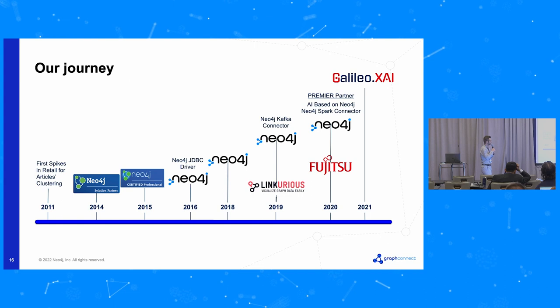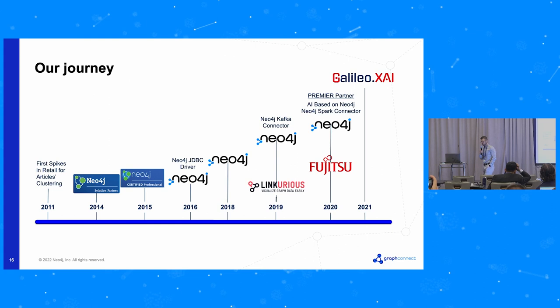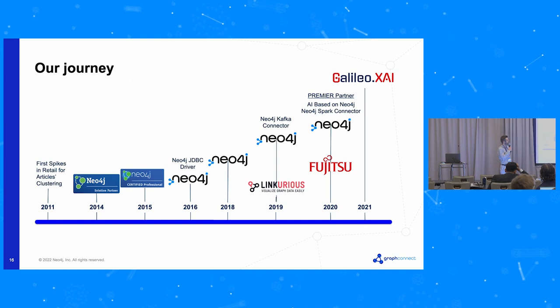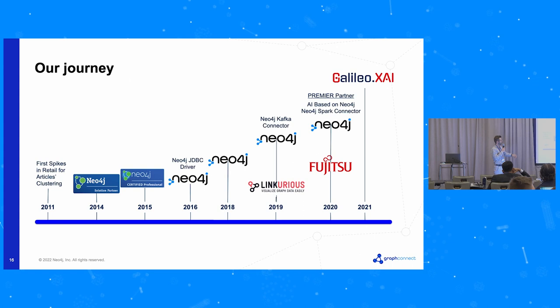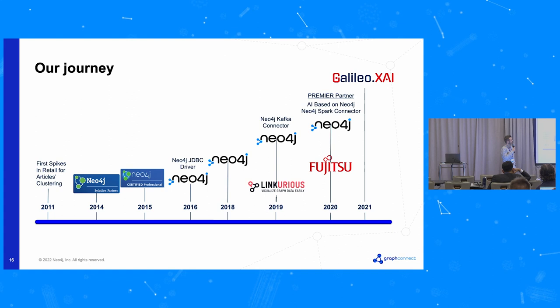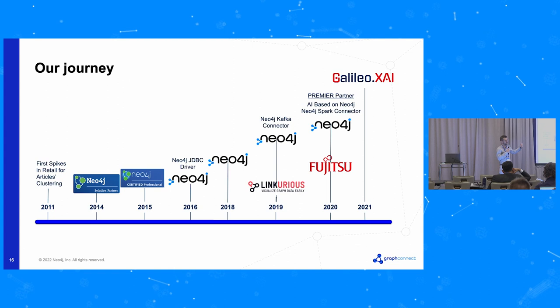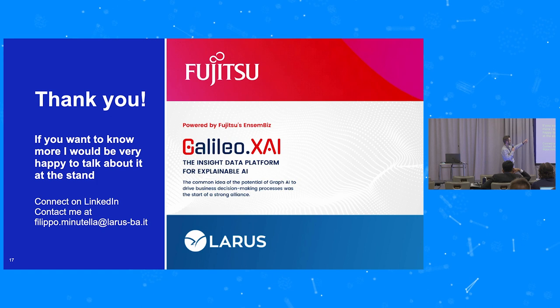I work at Larus as chapter lead. We have a long journey with Neo4j, having started 10 years ago. We have created our product Galileo.xai together with Fujitsu. Galileo.xai integrates many of the ideas I've presented, and includes Fujitsu's SamBit Deep Tensor to allow subject matter experts, users, and data scientists to create their models directly on our data platform. If you want to know more, I'd be very happy to talk — we are at the stand with Fujitsu. Thank you so much.